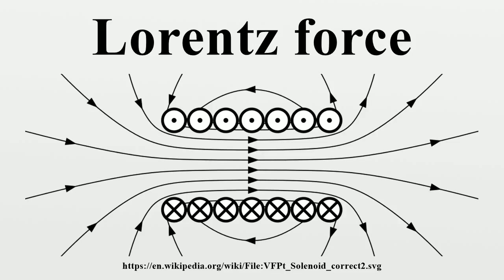Force on a current-carrying wire: When a wire carrying an electric current is placed in a magnetic field, each of the moving charges which comprise the current experiences the Lorentz force, and together they can create a macroscopic force on the wire. By combining the Lorentz force law with the definition of electric current, the following equation results. In the case of a straight, stationary wire, L is a vector whose magnitude is the length of wire and whose direction is along the wire, aligned with the direction of conventional current flow I. If the wire is not straight but curved, the force on it can be computed by applying this formula to each infinitesimal segment of wire dL, then adding up all these forces by integration.